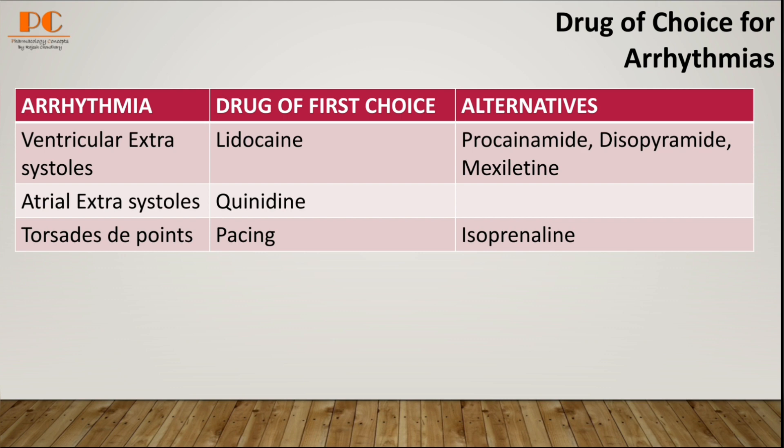For atrial extrasystole, we can use quinidine. And for torsades de pointes, we can use pacing or a pacemaker device, and esmolol as an alternative.